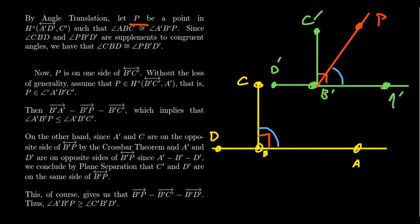Since CBD and PB'D' are supplements to congruent angles, they are also congruent to each other. So this angle D'B'P has to be congruent to the angle DBC, because if you are supplements to congruent angles, you are likewise congruent with each other.